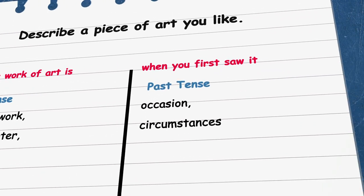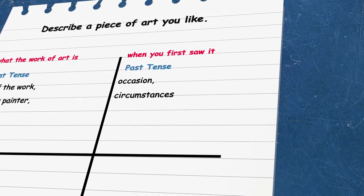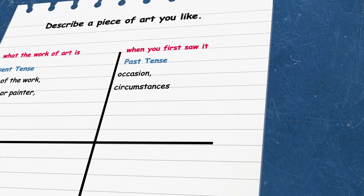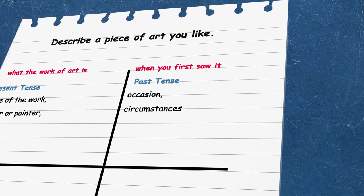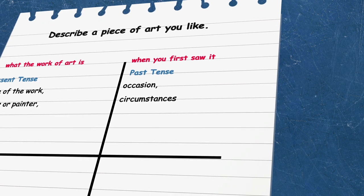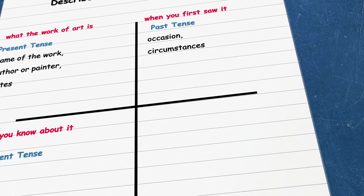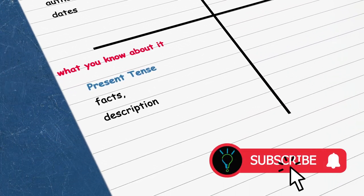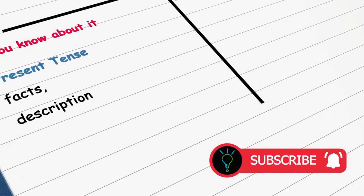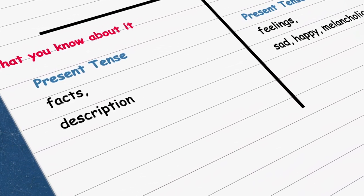For the second cue — when you first saw it — that's an action that happened in the past, so you need to use the past tense. In this case, you're describing an occasion or circumstances. For the third cue, we're going to use the present tense and list information about what we know about this work.